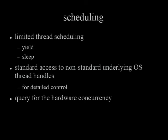The next thing is the scheduling of these threads. Scheduling is a very touchy issue, so we are probably going to only supply two mechanisms in the standard: a yield (which says 'now would be a good time to switch to somebody else') and a sleep (I want to go away for a while). Those are adequate for a lot of applications but won't be adequate for all. For those other applications, we'll give you a handle on the operating system thread so you can communicate with your OS about detailed scheduling issues. We will also have a query to find out what the hardware concurrency is on your system, giving you a measure of roughly how many threads you should fork off.